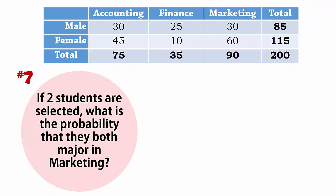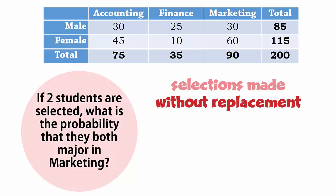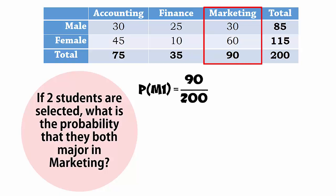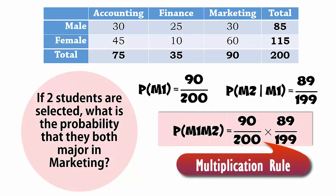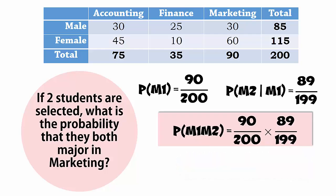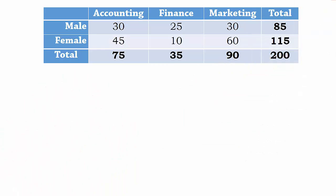Number 7: If two students are selected, what is the probability that both of them major in marketing? We will assume the selections are made without replacement. The probability that the first student is in marketing is 90 over 200. If the first selection is not replaced, then we have 89 marketing students and 199 students left in total. So the probability of selecting a second marketing student, given the first was also a marketing student, is 89 over 199. Therefore, the probability that both students are marketing students is 90 over 200 times 89 over 199, which is approximately 0.201. And that concludes this video. Thanks for watching.